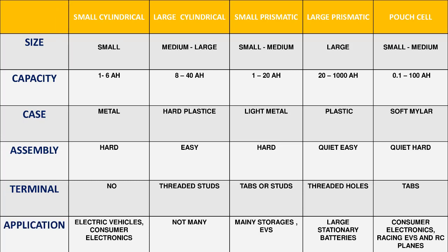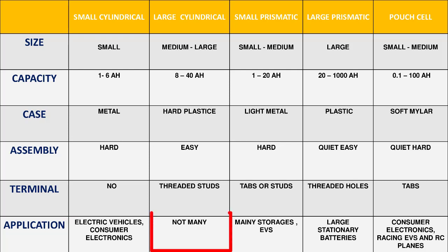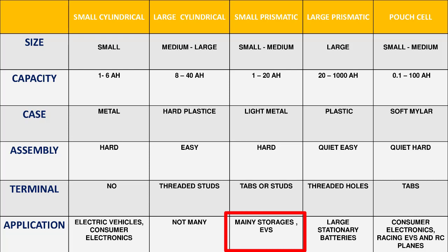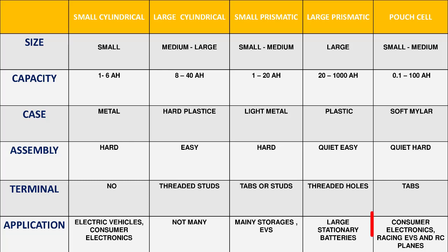Let's see the applications. For the small cylindrical cells, we use them mainly in electric vehicles and in consumer electronics. For large cylindrical cells, there are not many applications nowadays. For small prismatic cells, many storage devices and also electric vehicles use small prismatic cells. Large prismatic cells are used for storing energy, especially for grid storage and renewable energy storage. For pouch cells, they are mainly applicable for racing electric vehicles, RC planes, and consumer electronics such as mobile phones and tablets.